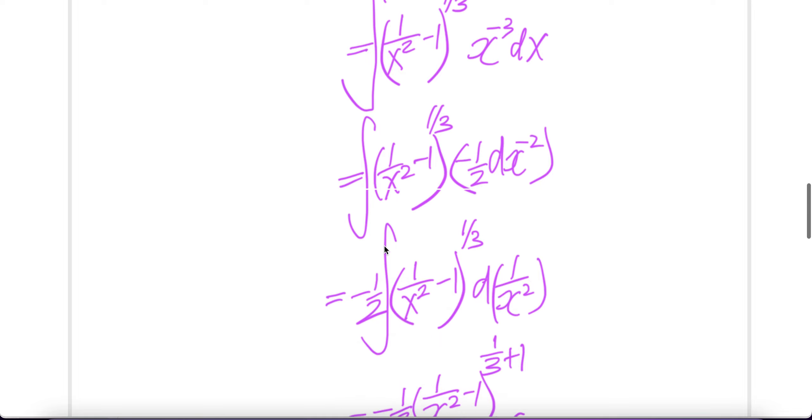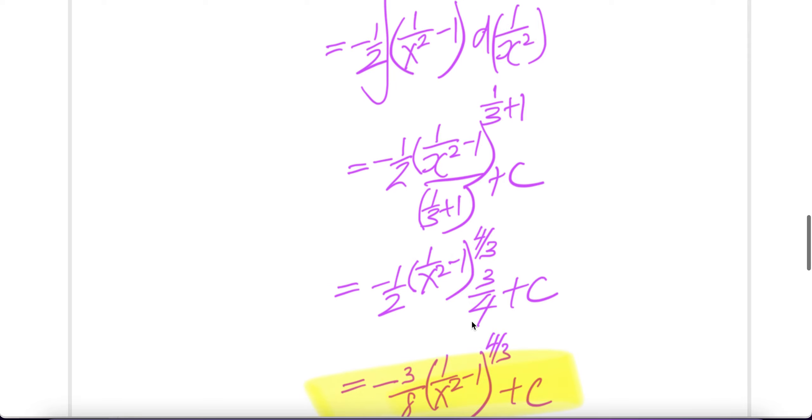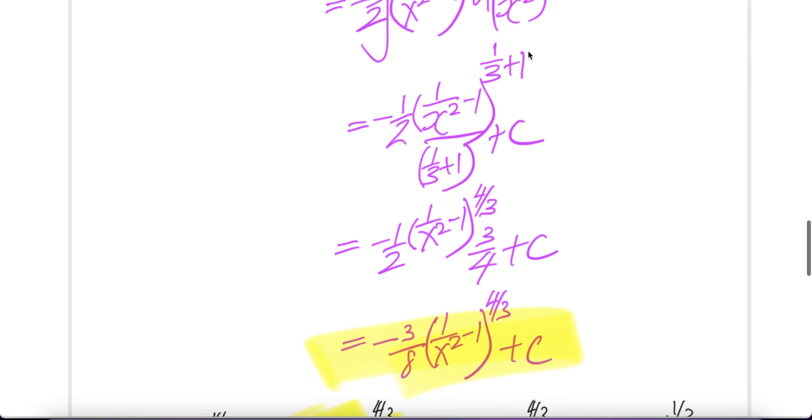Constant out and then you have integral of this piece to the power of 1 third d, write this as 1 over x square. The integral of that is 1 over x square minus 1, 1 third plus 1 divided by the same exponent downstairs plus c. 1 is 3 over 3, 3 plus 1 is 4 over 3 upstairs, 4 over 3 downstairs, flip it out would be 3 over 4.